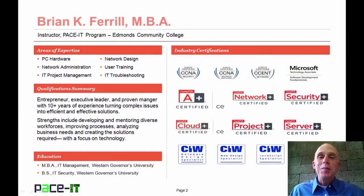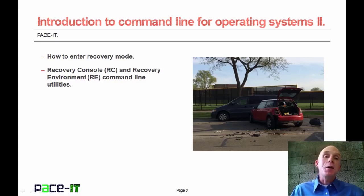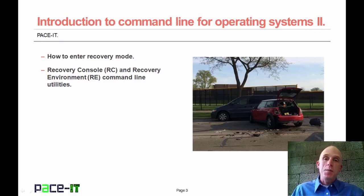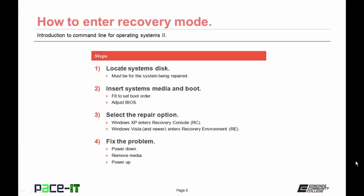I'm Brian Farrell, and welcome to PACE IT's session on the command line for operating systems, part two. Today we're going to talk specifically about command line to recover from a crash. First, we need to talk about how to enter recovery mode. You'll need your system disks — they need to be the same OS disks as the system you're trying to repair. Insert the media, whether USB or CD, and boot to that media. On many systems, you can hit F8 to adjust the boot order, or you may need to enter the BIOS.